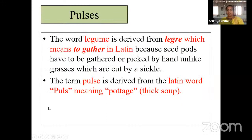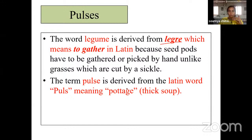Let's start with pulses. What is a pulse? The pulse, as mentioned, is a legume. Legume is a Latin word derived from 'legere', which means to gather — seed pods have to be gathered or picked up by hands, unlike grasses. For cereals, we call the harvesting process reaping, but in pulses we just cut or pick up the pods by hand.